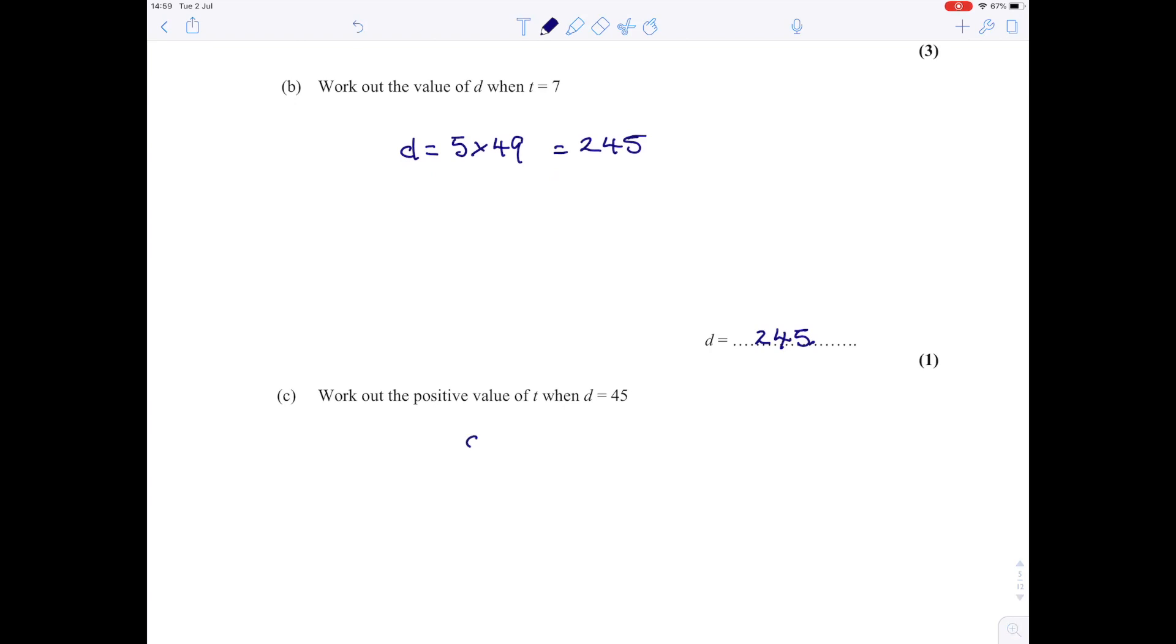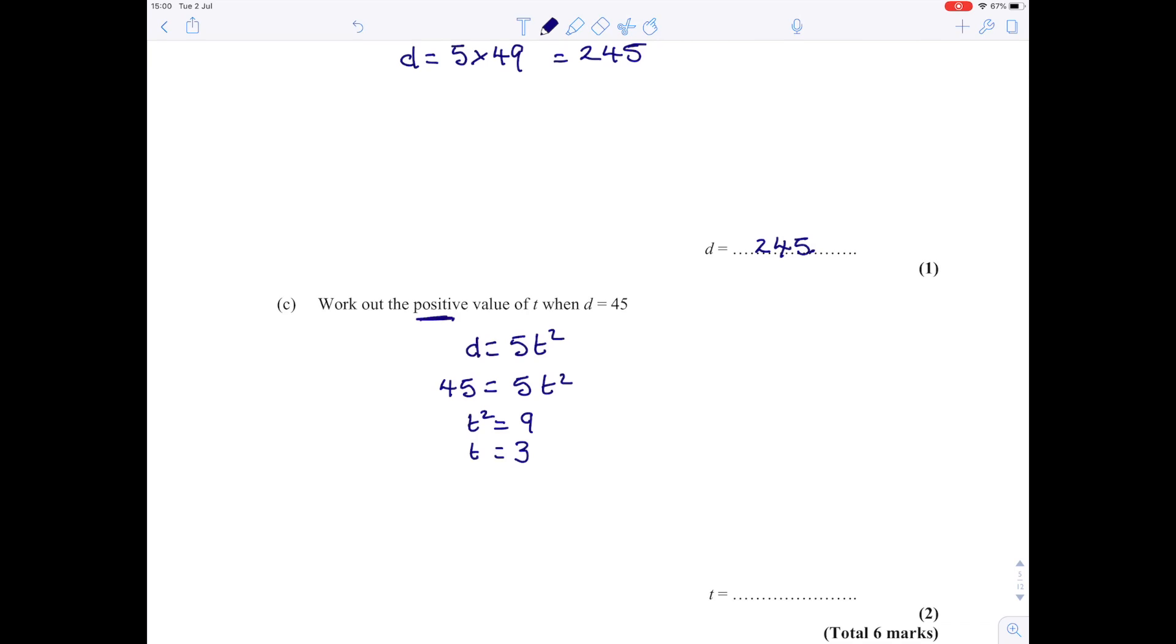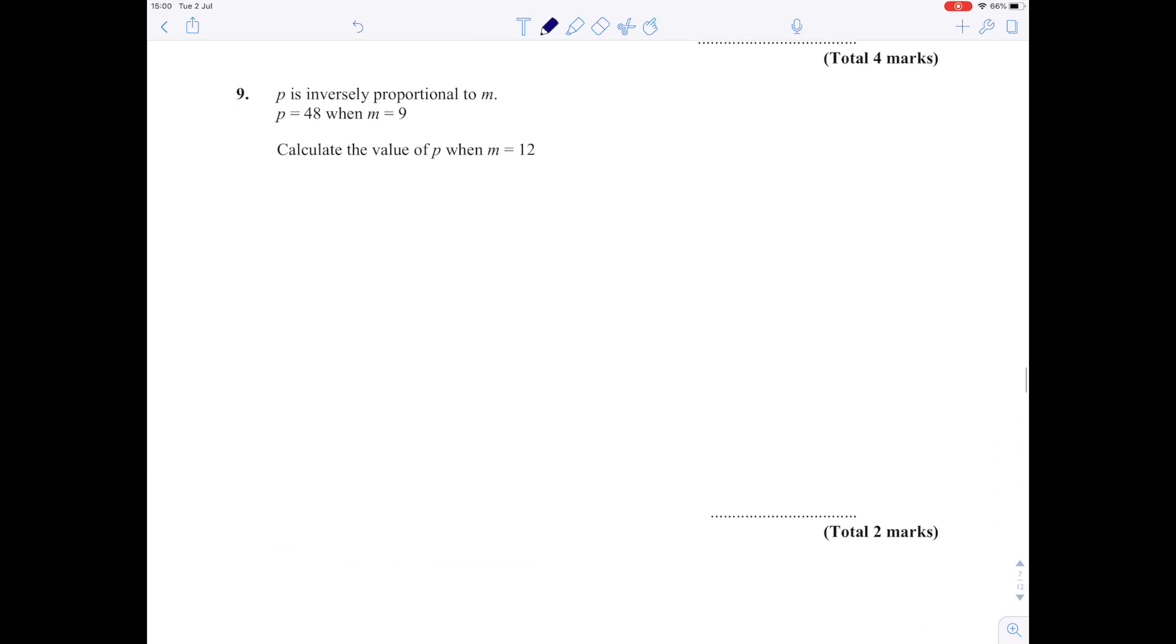Work out the positive value of t when d equals 45. Remember our connection is d equals 5 t squared. So if d is 45, we have 45 is 5 t squared. Divide both sides by 5: t squared equals 9. Square root, and you get plus 3 or negative 3. This is where it matters that they say the positive value of t, so the only one they want is the value 3.